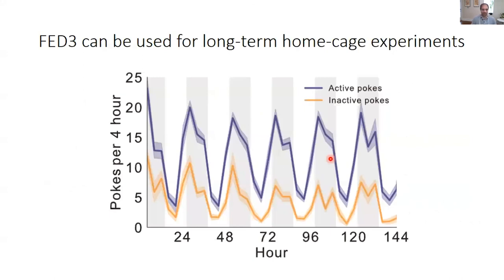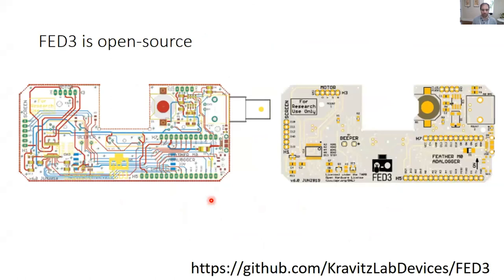Because the device lives in the home cage, it can also do things that are typically not done. Here we're looking at six days of data — nose poking around the clock — and we see a nice circadian rhythm, as well as variance based on where in the day the animal's poking. This really tells you about the importance of understanding whether you're running the animals in the morning or the afternoon. I'm aware of about 30 labs that have built this device themselves, and a few that are starting to modify the design — which is really the promise of open source dissemination.